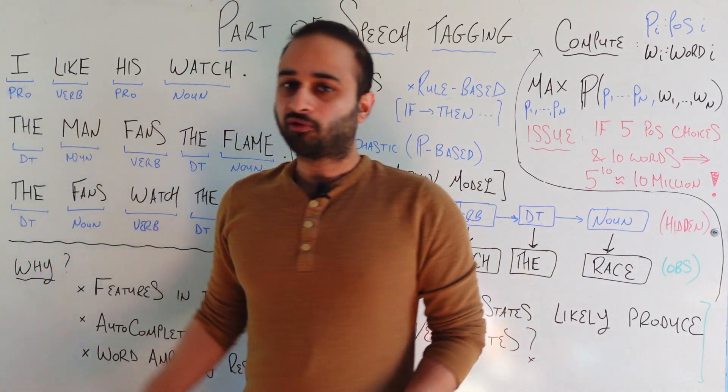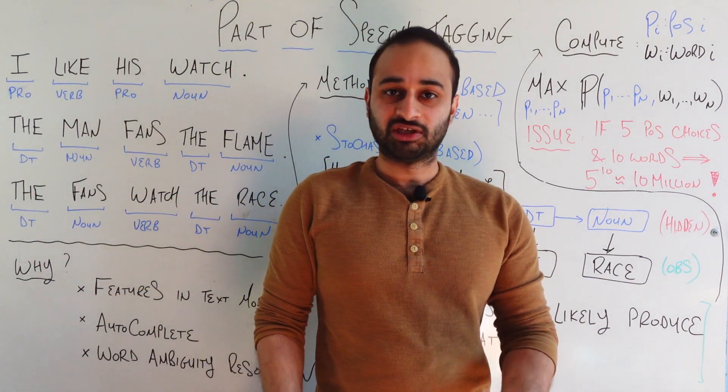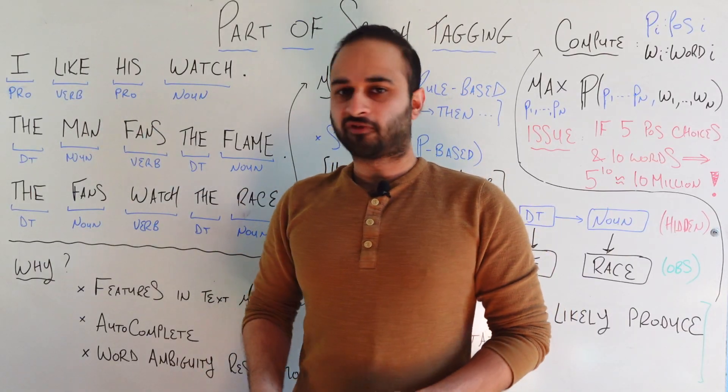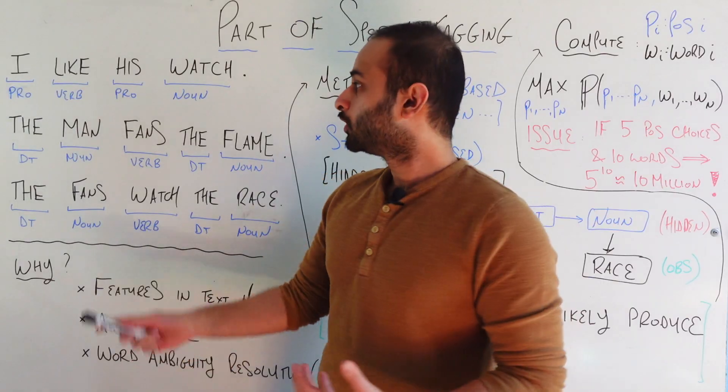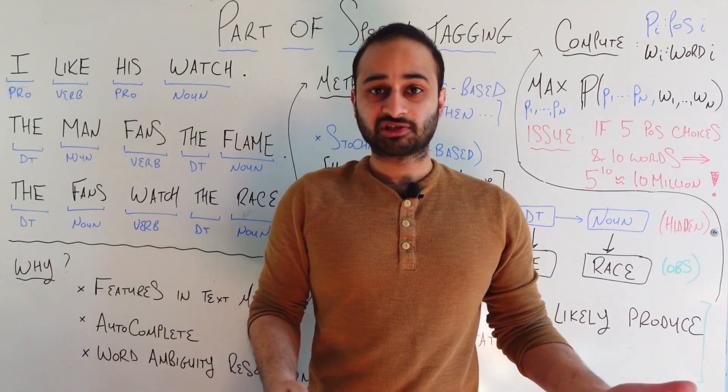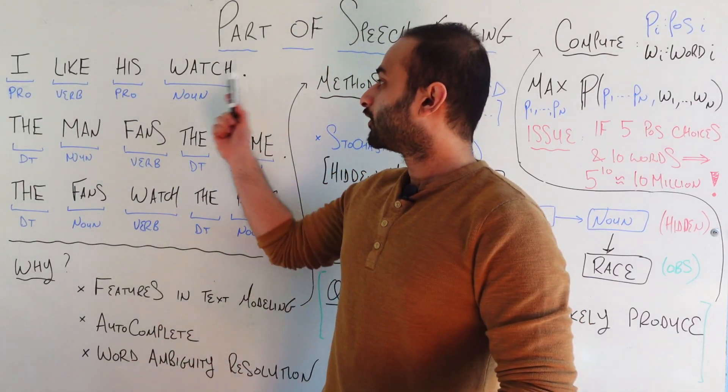The first one is a pronoun. For example, I, he, she, it, so on. The next one is a verb, like, because that's an action. You are actively liking something. The next one's also a pronoun, his, to refer to somebody else. And the last one is watch.